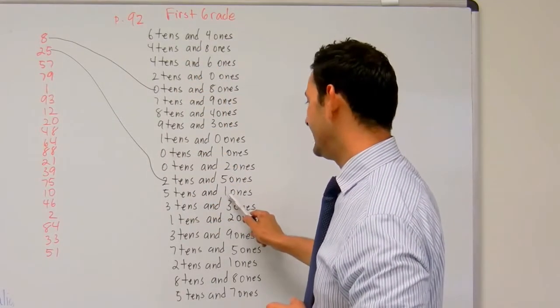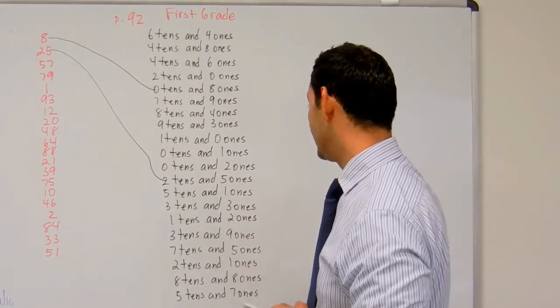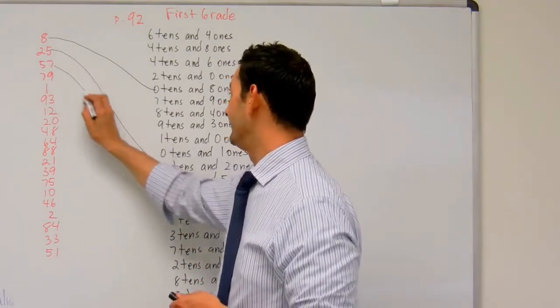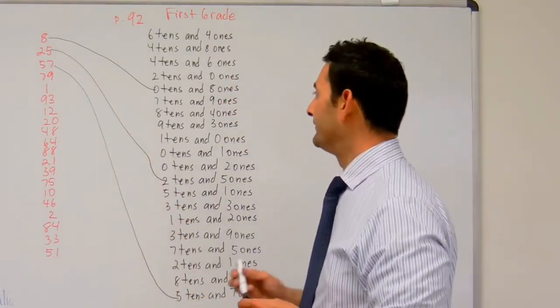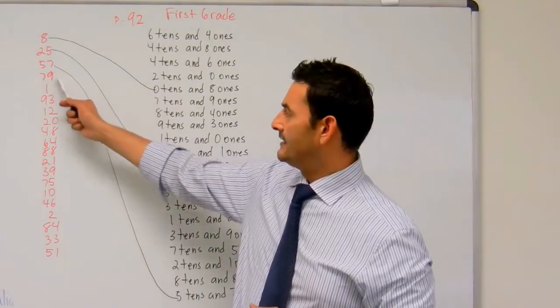One one. That's not it. Five tens and seven ones, it's way at the bottom. Connect it there. Now let's take a look at the number 79.